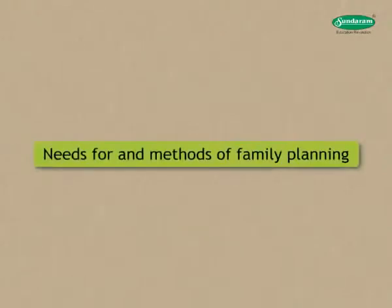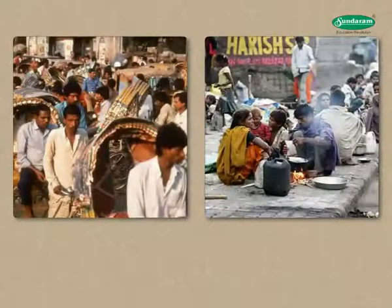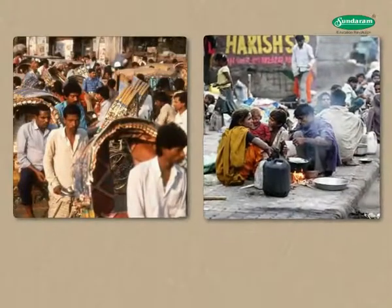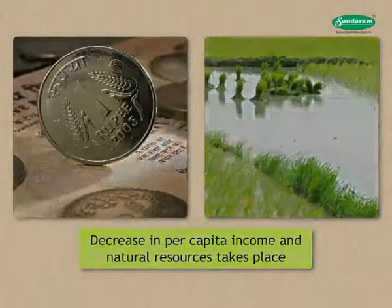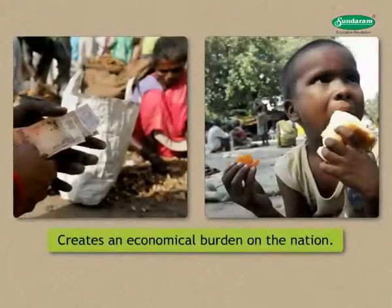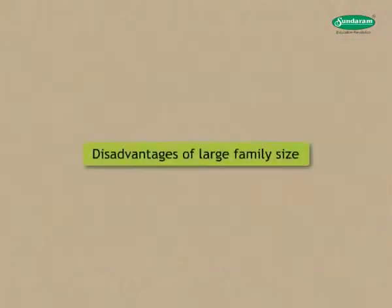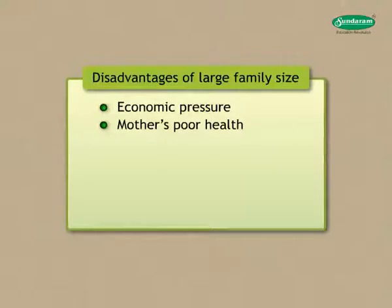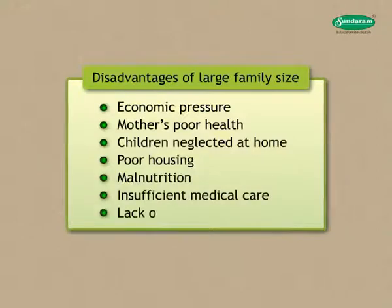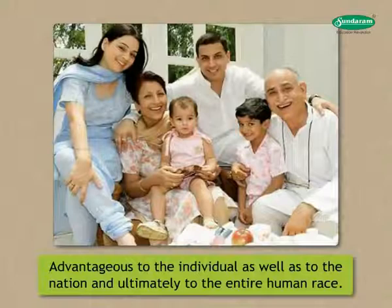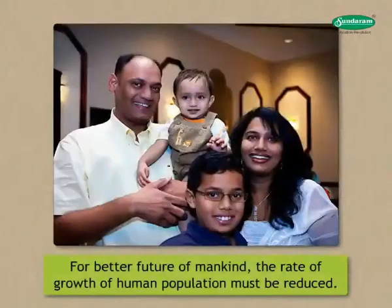There is a strong relation between high national fertility rates and measures of poverty. As population density increases, per capita income and natural resources decrease, and general health also goes down, creating an economic burden on the nation. Large families bring economic pressure, poor maternal health, neglected children, poor housing, malnutrition, insufficient medical care, and lack of better education. A limited family size is advantageous to the individual, the nation, and ultimately the entire human race.